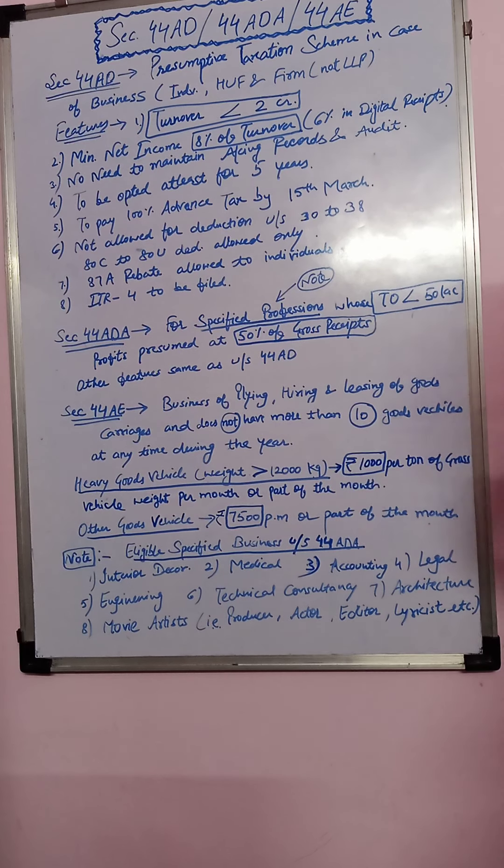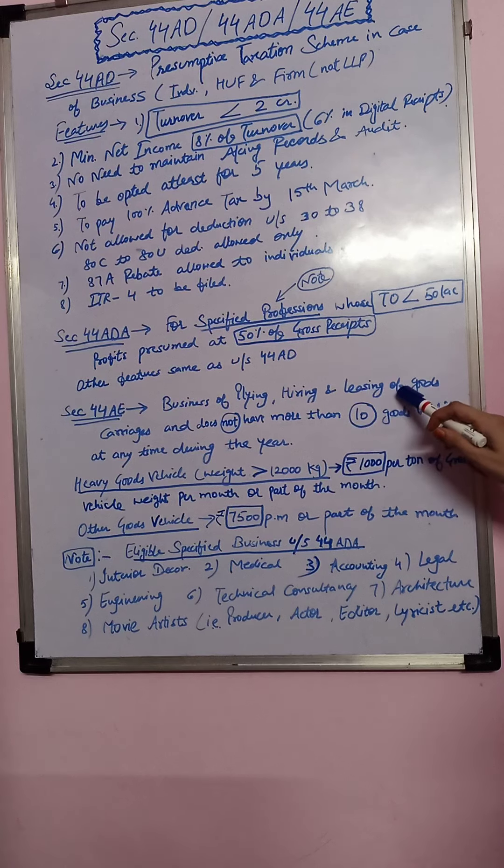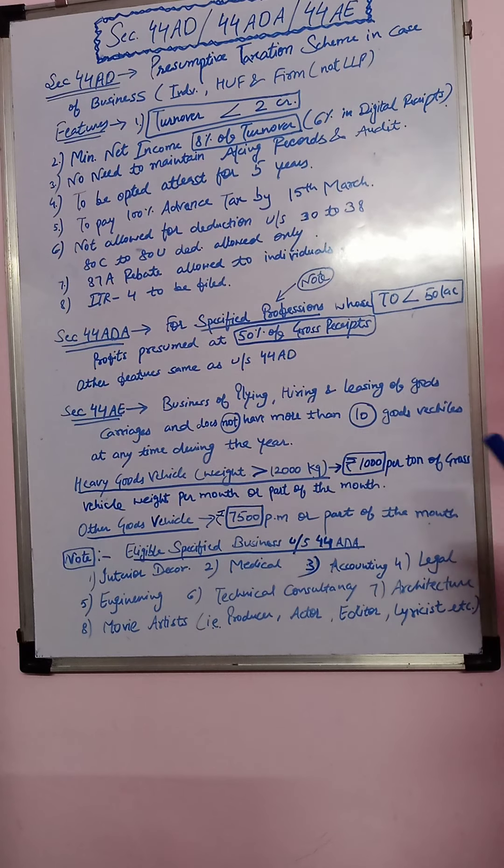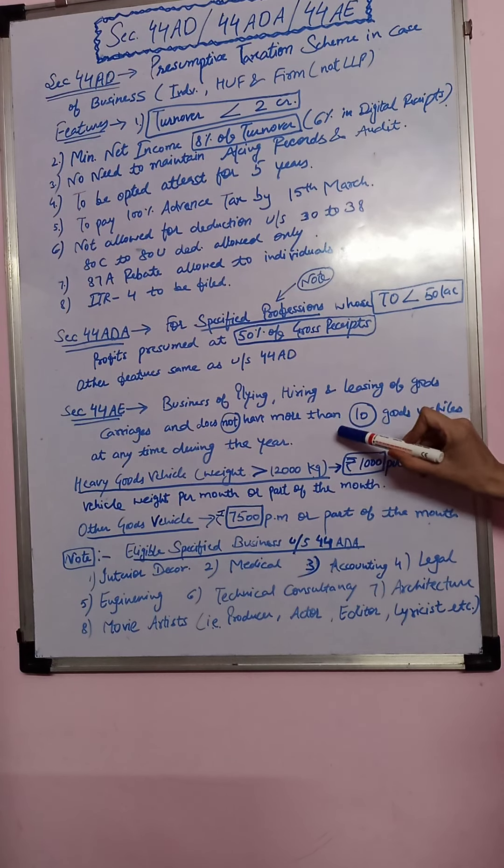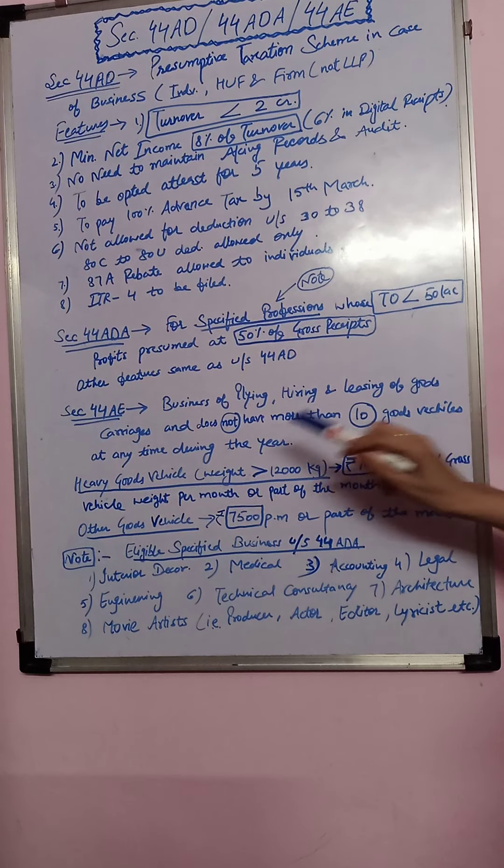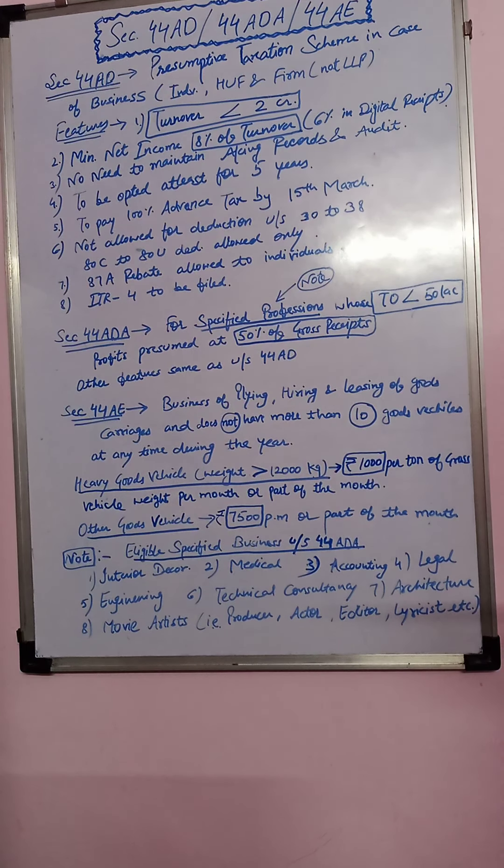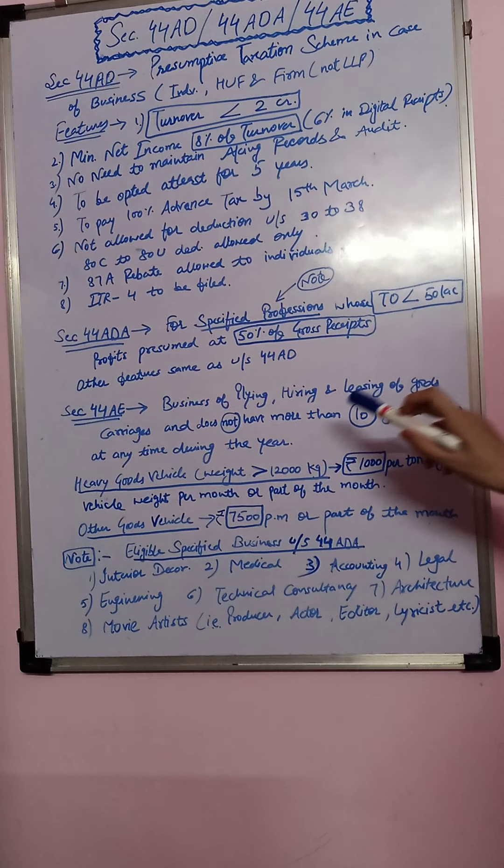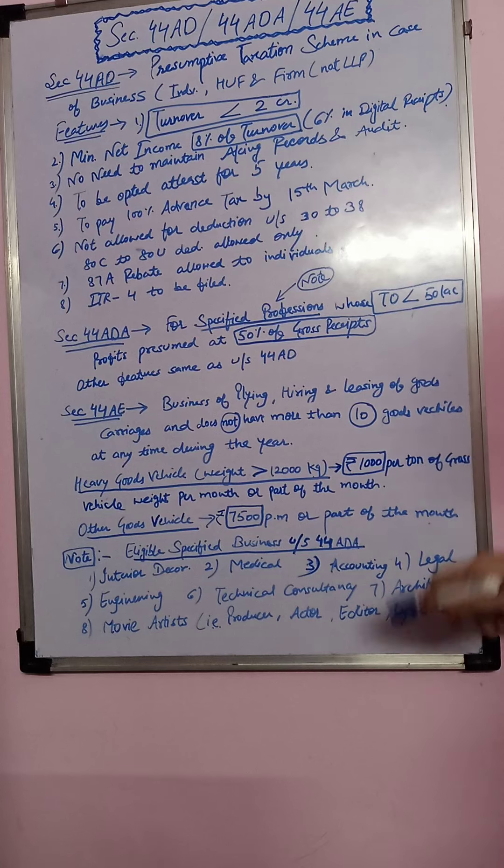Next, Section 44AE. Who are in the business of plying, hiring and leasing of goods carriages. And does not have more than 10 goods carriages at any time during the year.